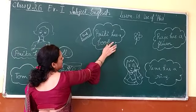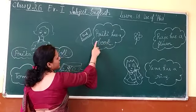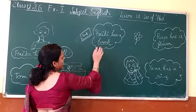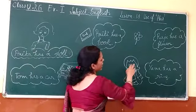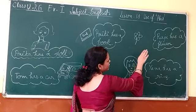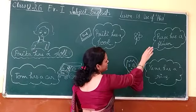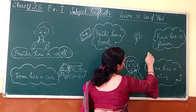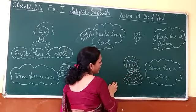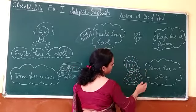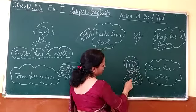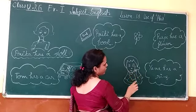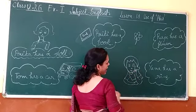Now Preeti has a dog. Preeti has a dog, so we will use 'has'. Now Raju has a dog. Raju is a singular person, so we will use 'has'. Yana has a wing. Yana is a singular person, so we will use 'has'.